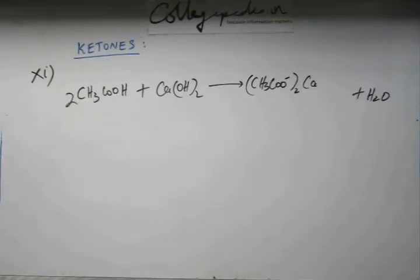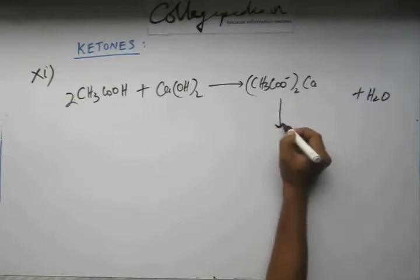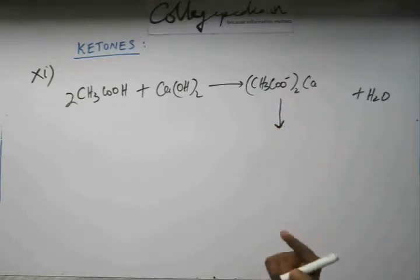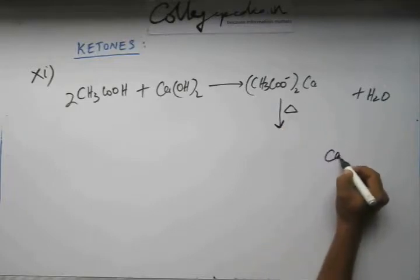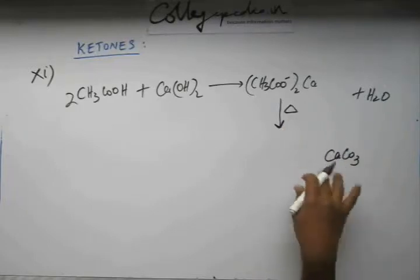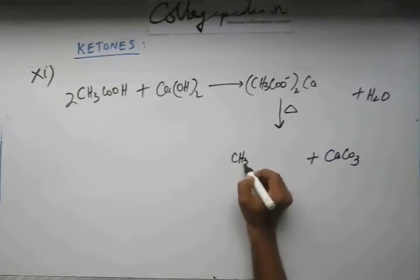We have to take two molecules of acetic acid here. This will be the simple reaction. Now what happens is, when we heat this calcium salt of carboxylic acid, when we heat calcium carboxylate, then calcium carbonate is produced and apart from that, we get a ketone.